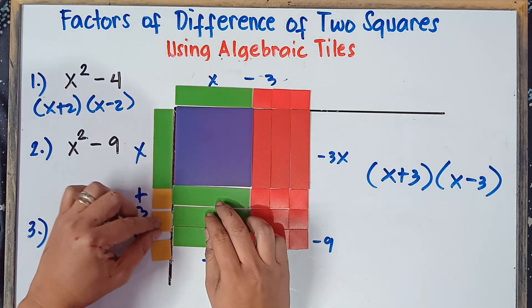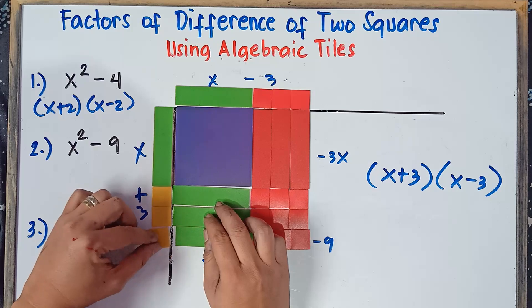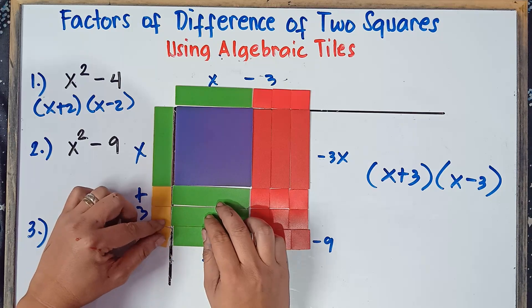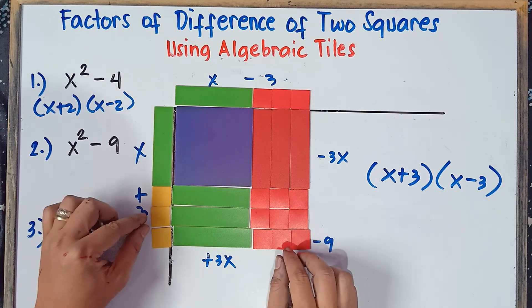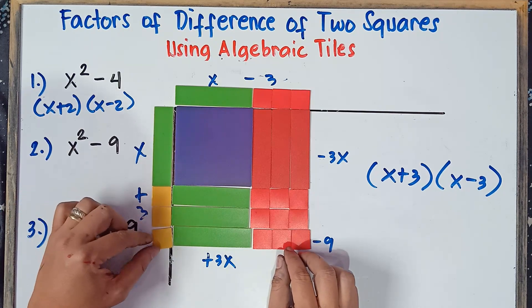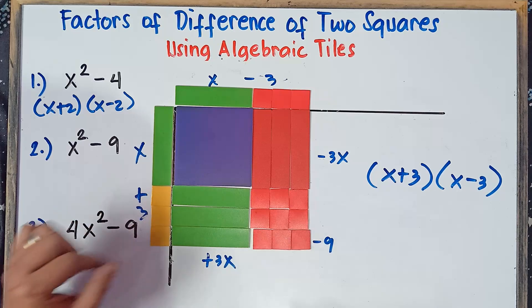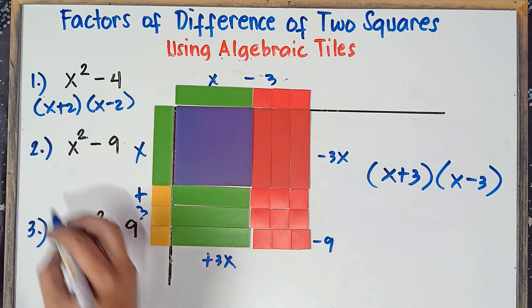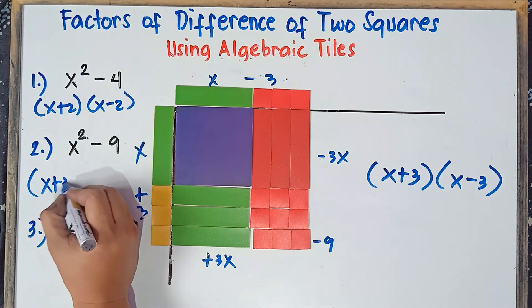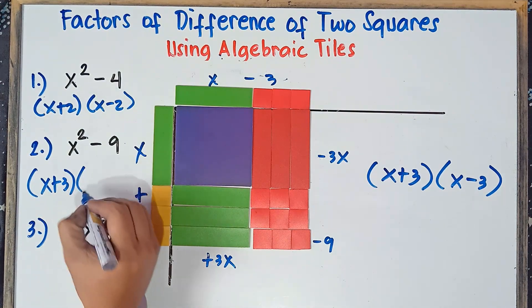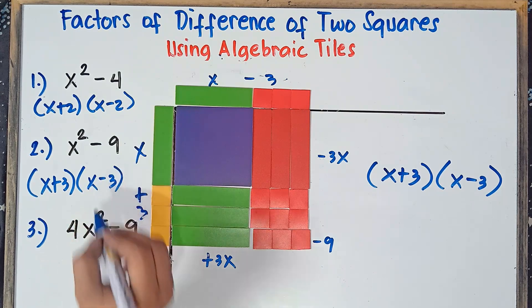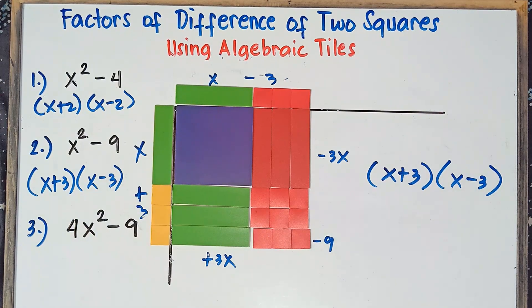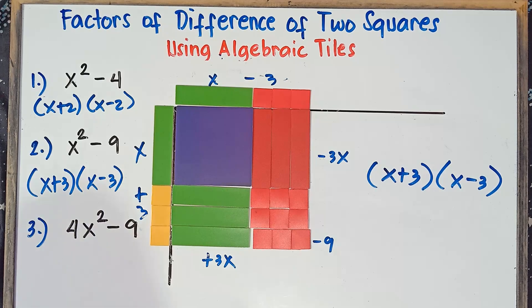That's the answer with regards to example number 2: we have x plus 3, and the other one, x minus 3. All set.